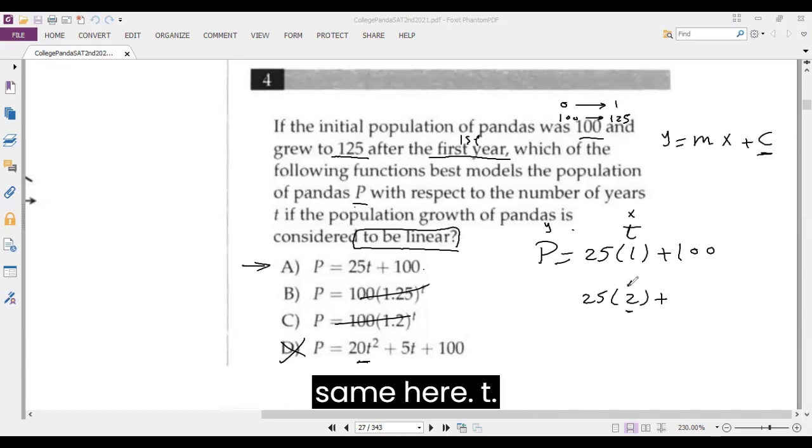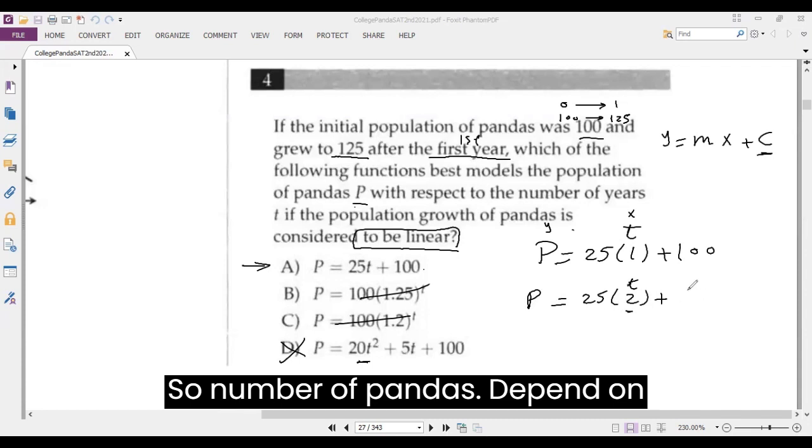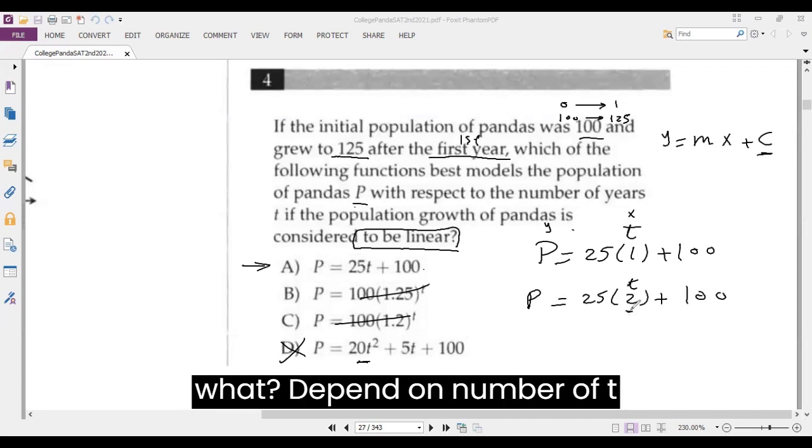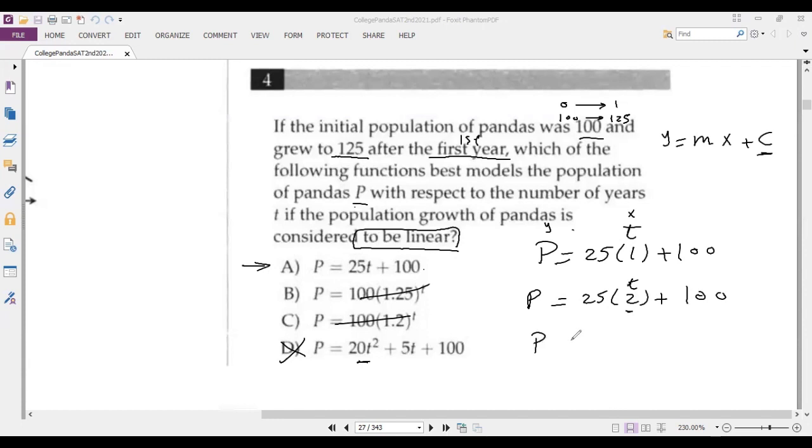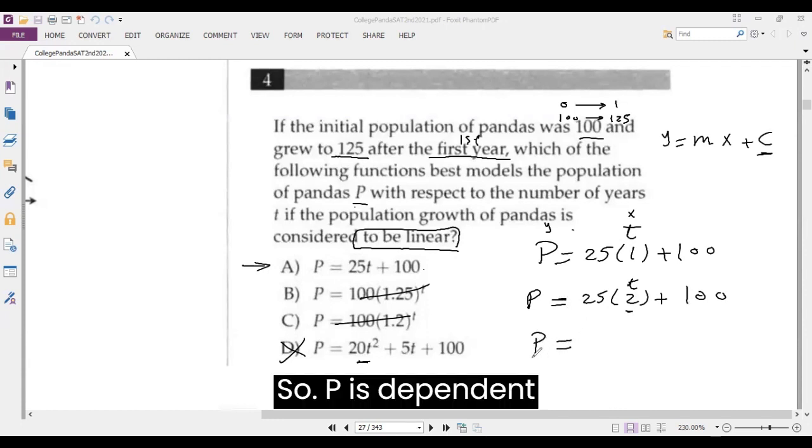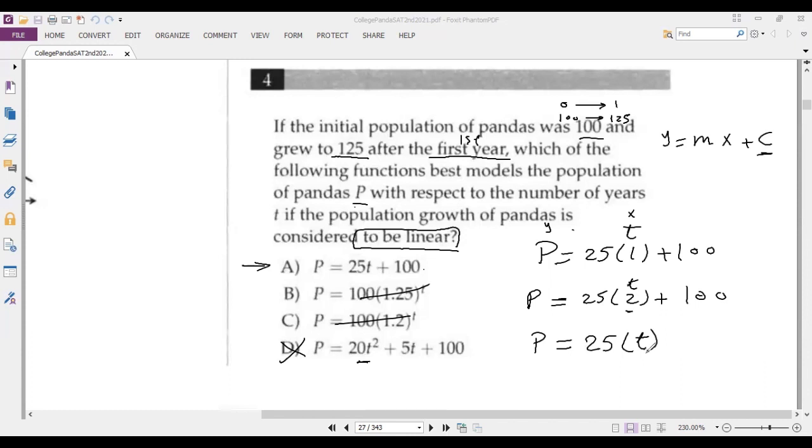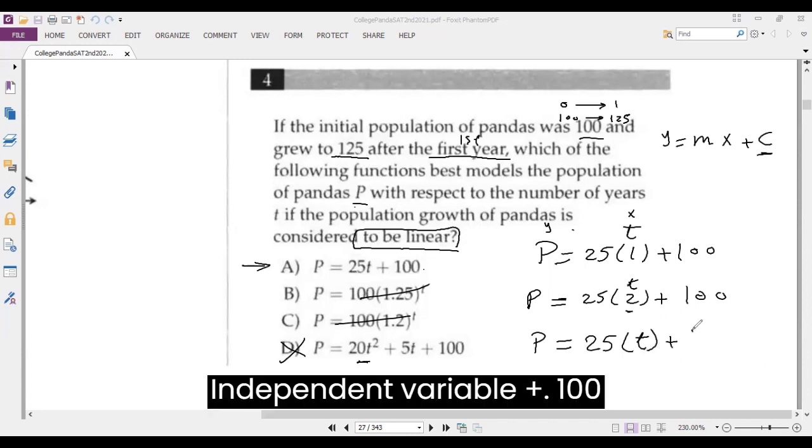The same here, T. So number of pandas depend on what? Depend on number of T. So P is independent variable, 25 of T, dependent variable plus 100. The answer is very clear now.